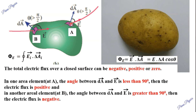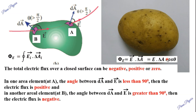When the electric field lines go out of the surface, the angle between the two vectors is less than 90°. At point B, when the E vector and area vector have an angle greater than 90°, cosθ becomes negative, so the flux is negative.